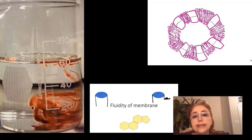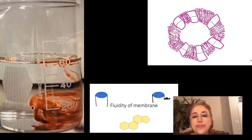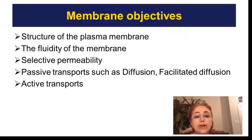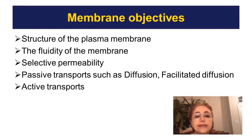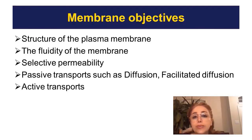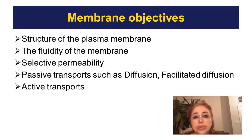This video is Part 1 and the links for the rest of the videos have been posted in the description. The objectives for this video are: we will go over the structure of the plasma membrane, its function and fluidity, selective permeability, passive transports such as diffusion and facilitated diffusion, and active transport. There is also a demonstration at the end of this video — don't miss it.